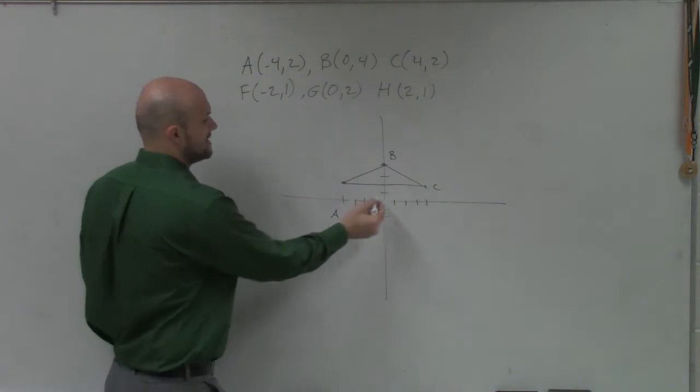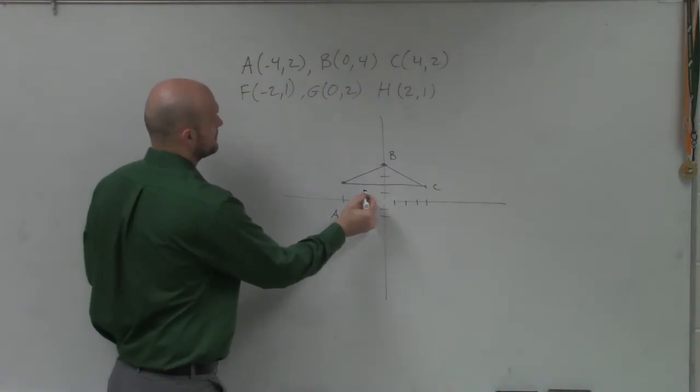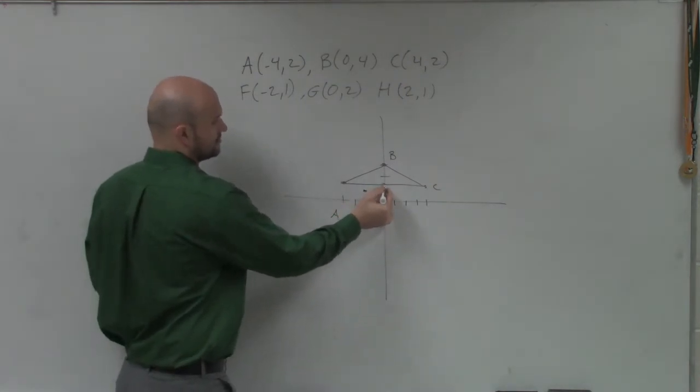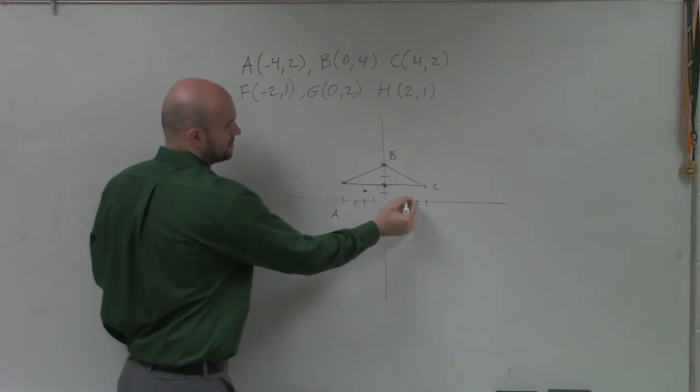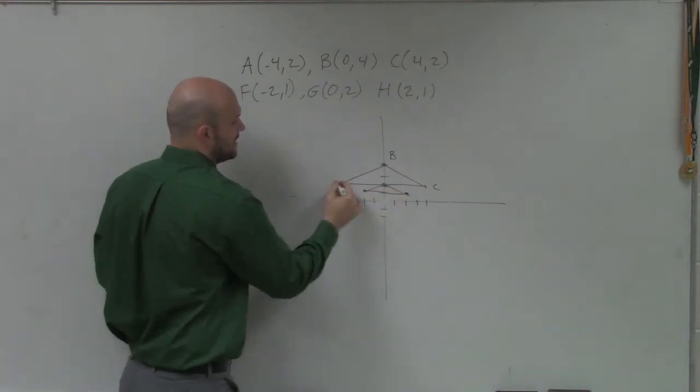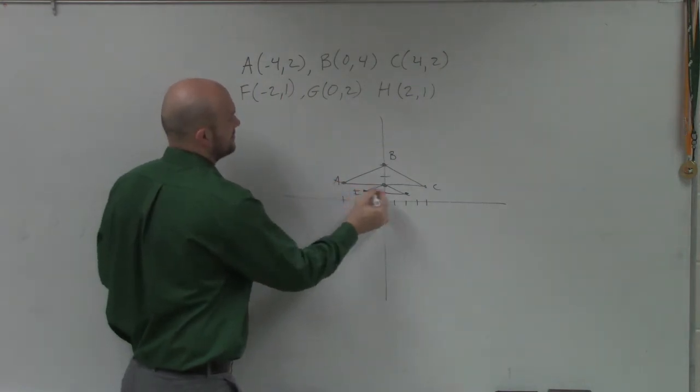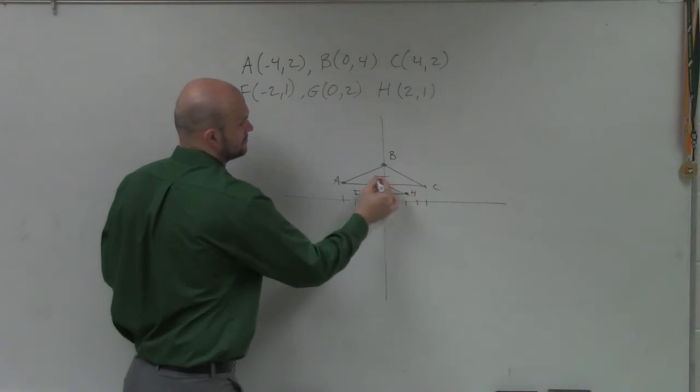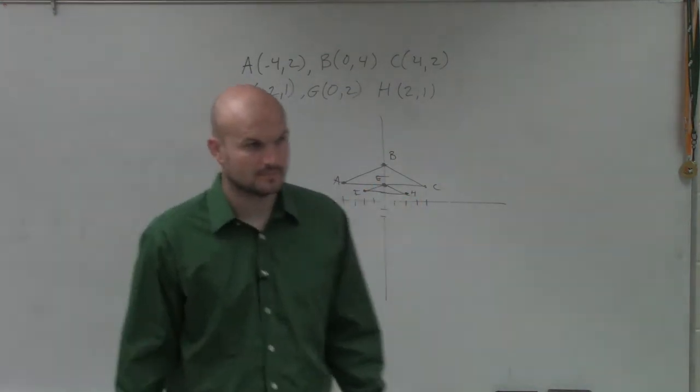Then our next image is negative 2, 1, 0, 2, and then 2, 1. And again, I'm going to label all these points. So that was F, G, and H. Would everybody agree with me? OK.